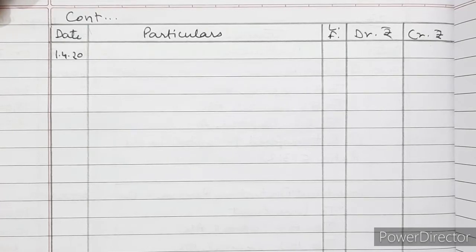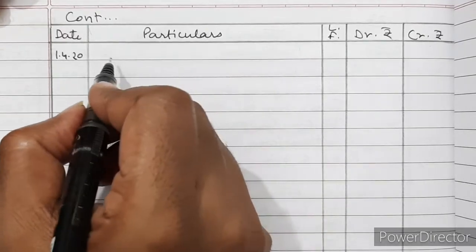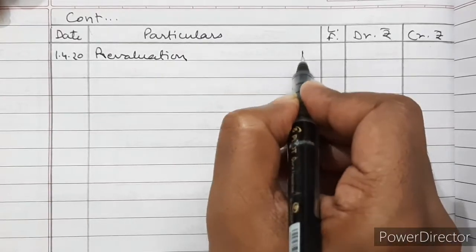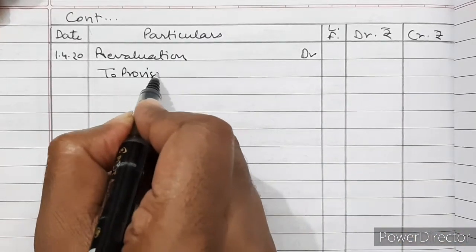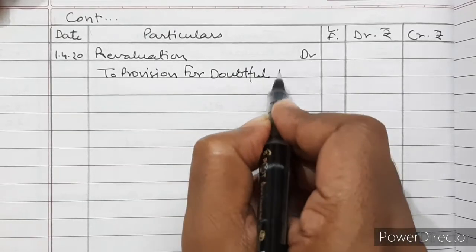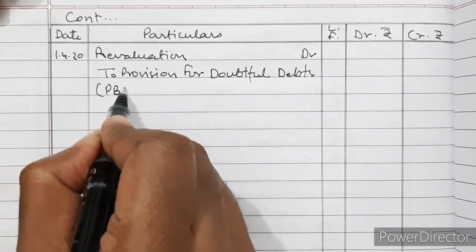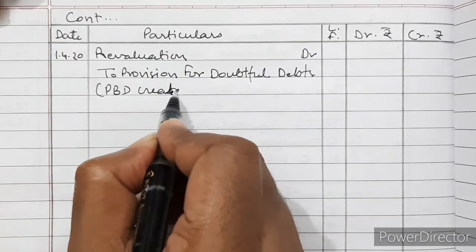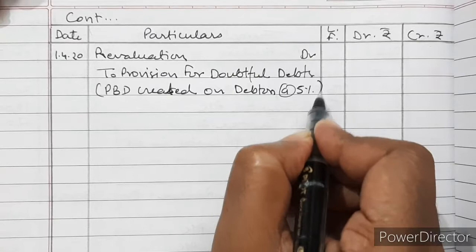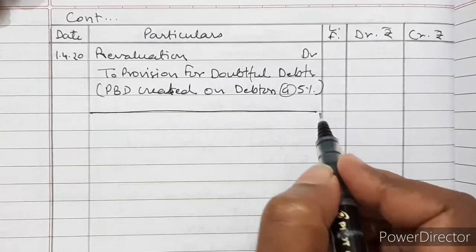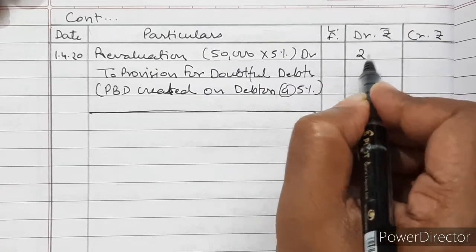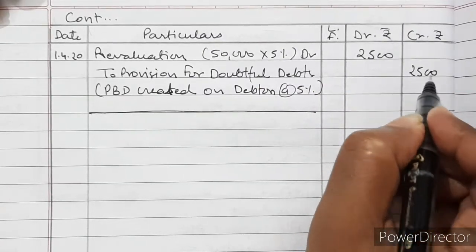Next is provision for doubtful debts to be created. Revaluation Account debited to Provision for Bad and Doubtful Debts. PBD created on debtors at the rate of 5%. Debtors are Rs. 50,000, so 5% is Rs. 2,500.